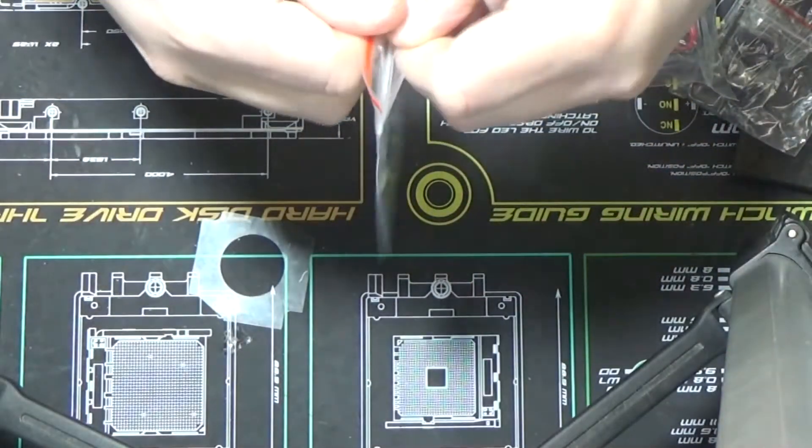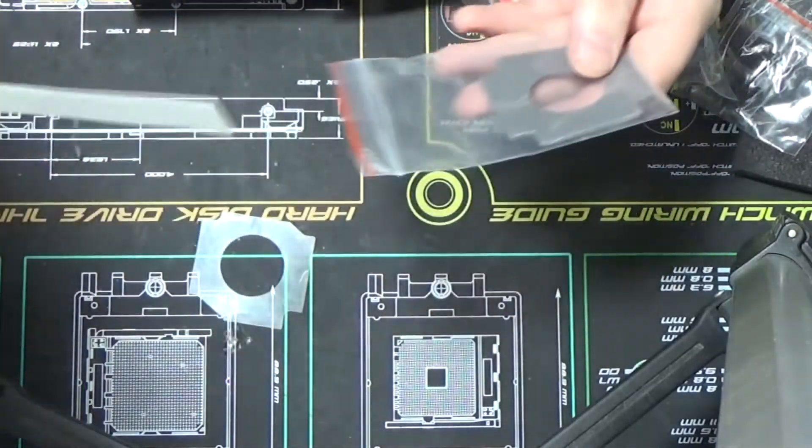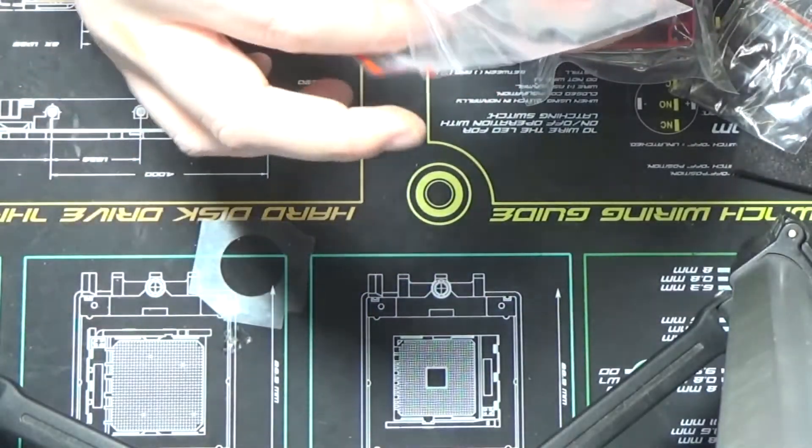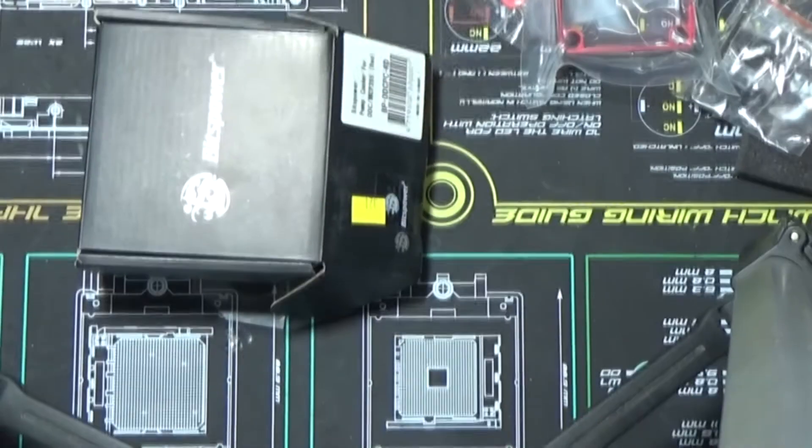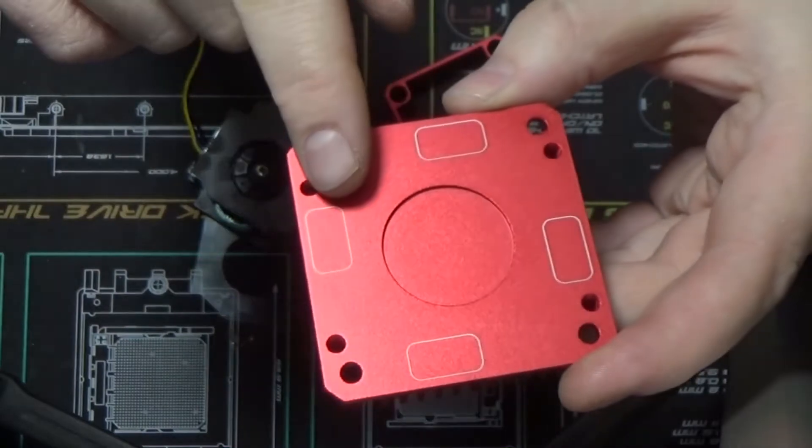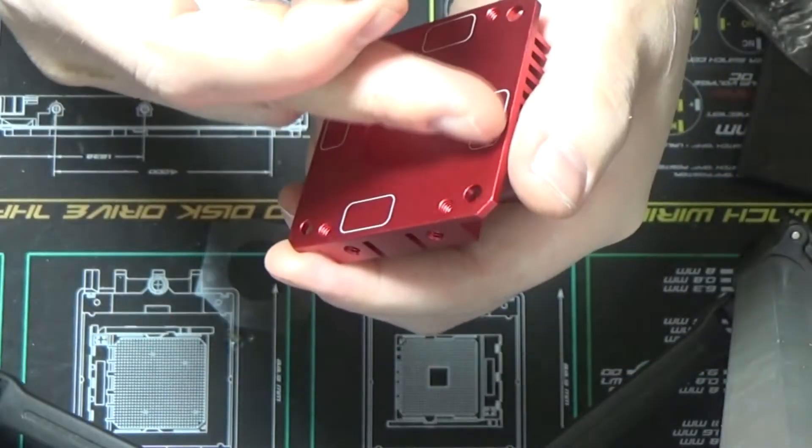Remember how we talked about that piece of insulation tape on the last one? Bits Power goes ahead and gives you a long piece to cut for yourself. I've never had a DDC heat sink short out from metal-to-metal contact, but it can happen, in case you were wondering.